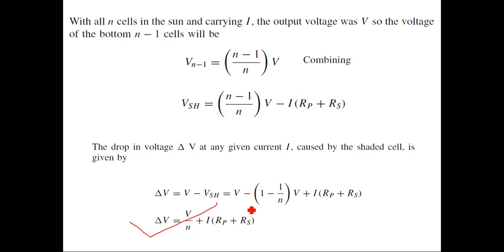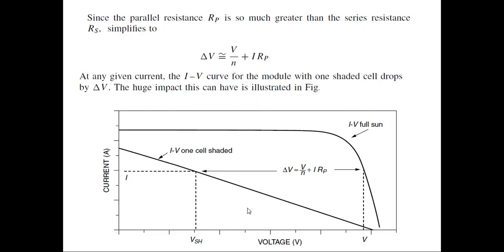The equation gives delta V = V/N + I × (Rp + Rs). Since Rs is as small as possible, we can ignore it, so delta V is approximated as V/N + I × Rp. Looking at the IV curve of the module with one shaded cell, this delta V represents the voltage that has been dropped. There is a reduction in the IV characteristics — the curve is very flat and the uppermost portion is not usable. With two shaded cells, there is further degradation in the quality of the IV curve.